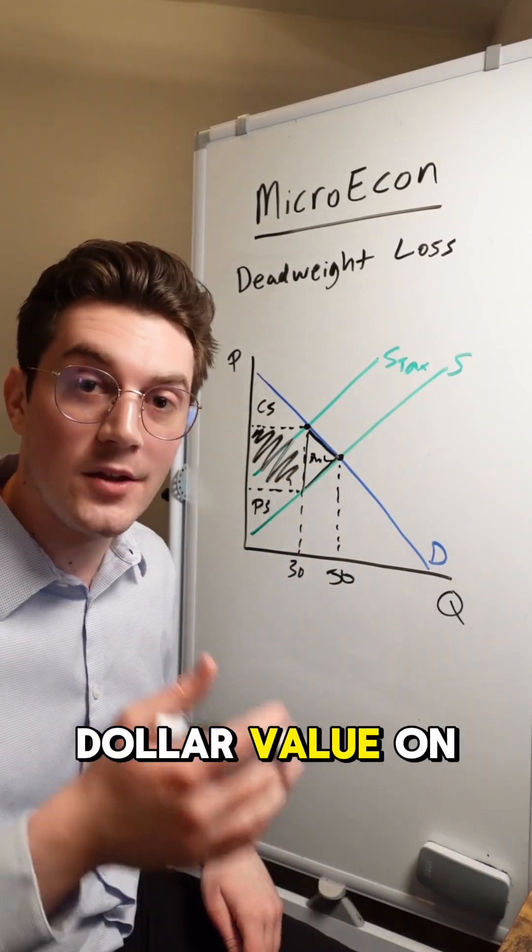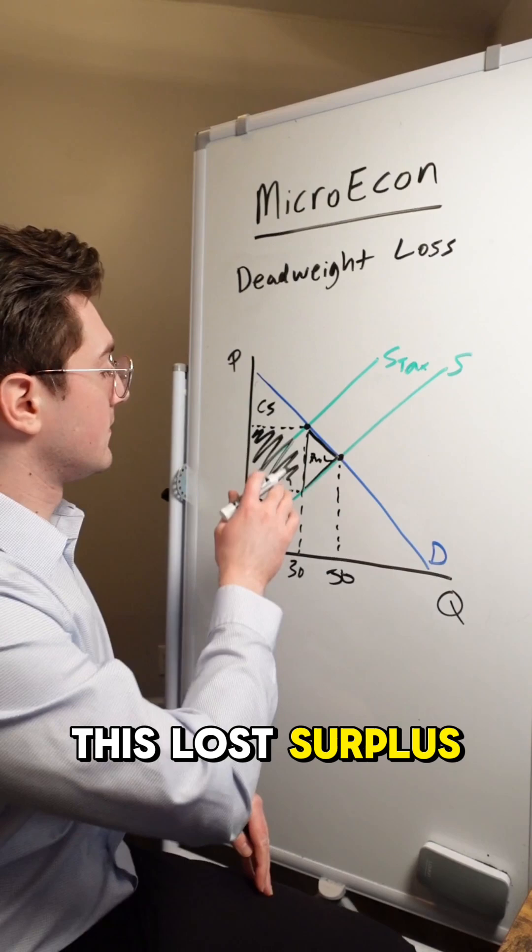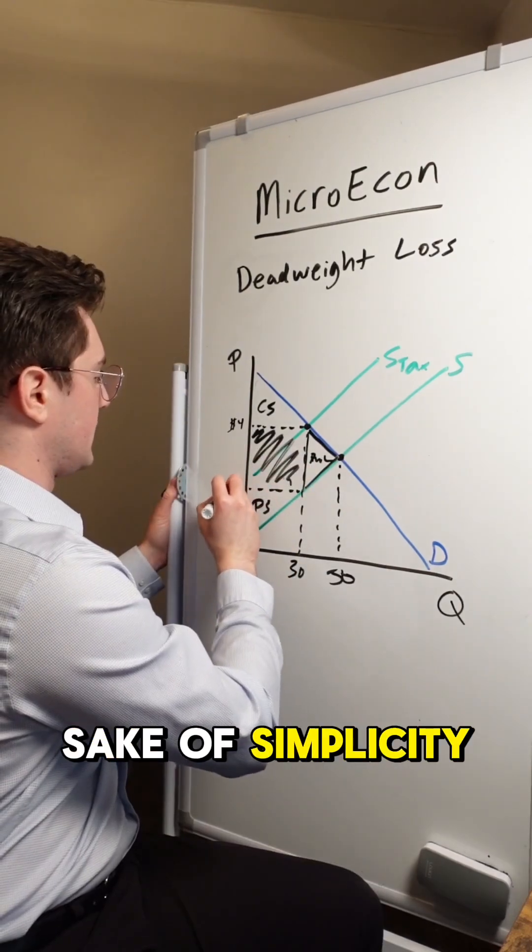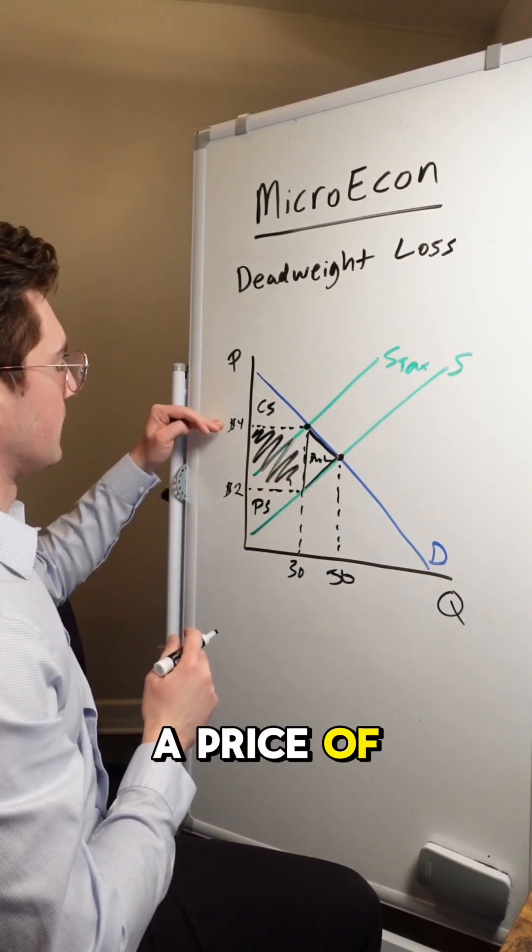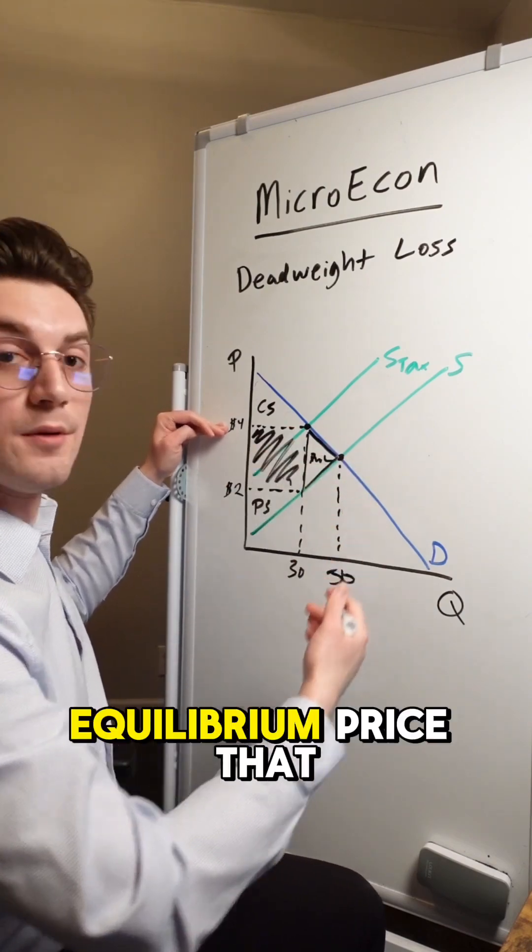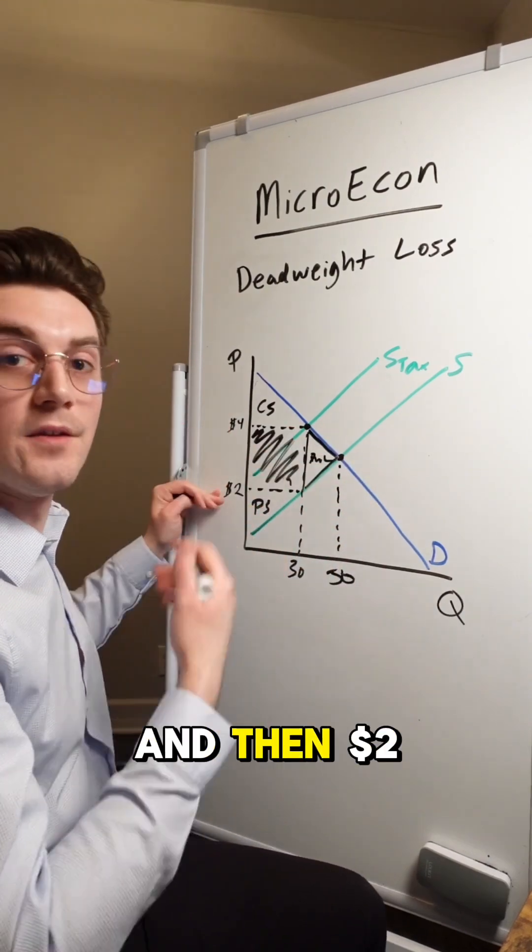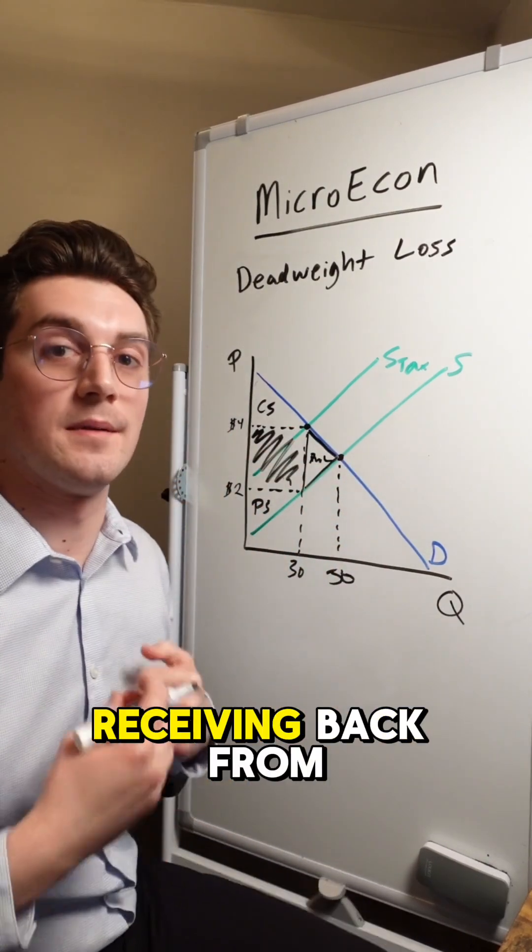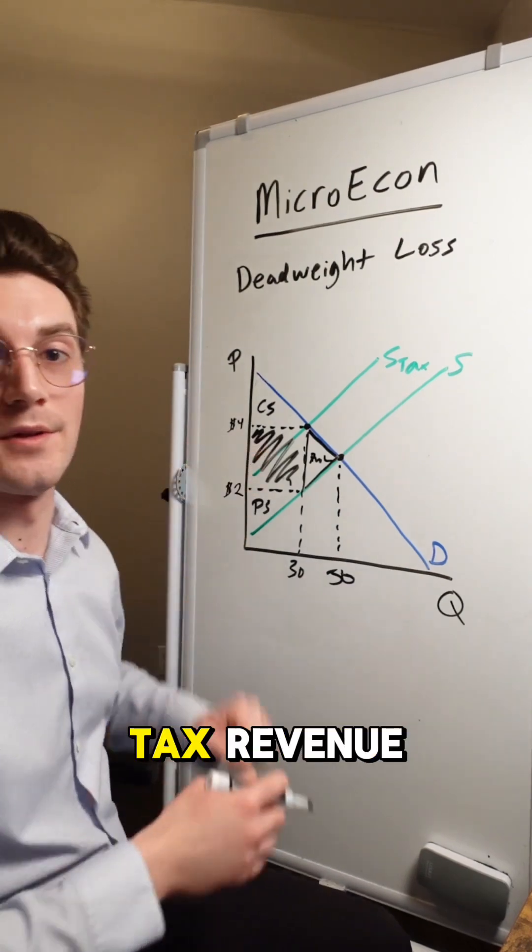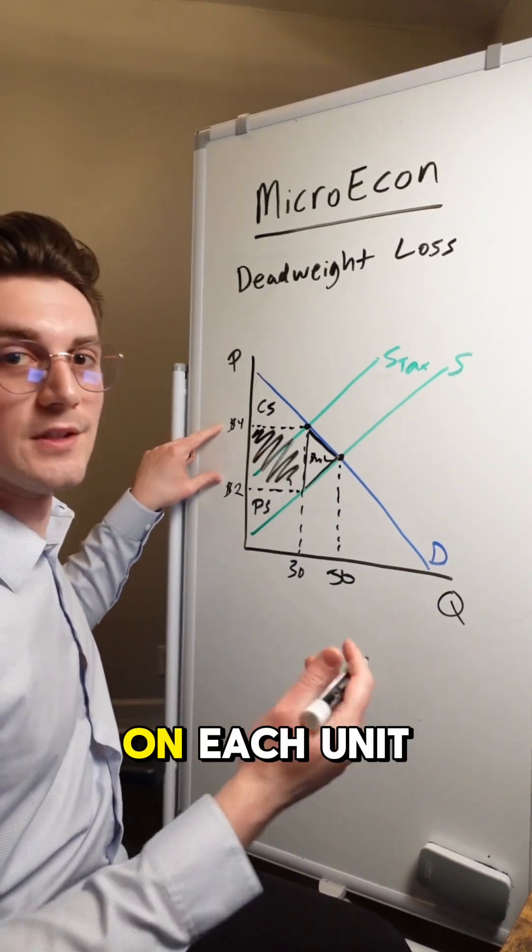If we wanted to put a dollar value on this lost surplus, let's find the area of this triangle. And for the sake of simplicity, I'm just assigning a price of $4 to be the equilibrium price that consumers are paying. And then $2 that producers are receiving back from each unit. The difference here is going towards tax revenue. In other words, a $2 tax on each unit.